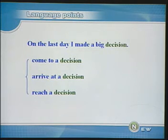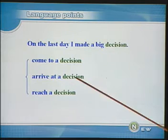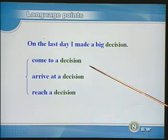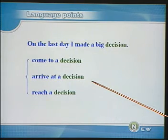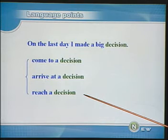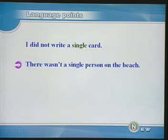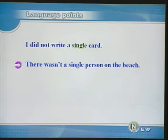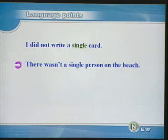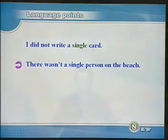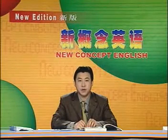做决定还可以有其他几种说法和其他的动词搭配使用。我们来看一下: Come to a decision, arrive at a decision, reach a decision. 我们再看下一个语言点。I did not write a single card. 我连一张明信卡也没有写。Single强调是单数的概念。There wasn't a single person on the beach — 海滩上一个人也没有。